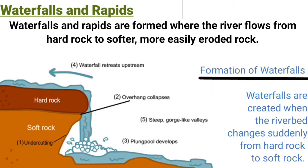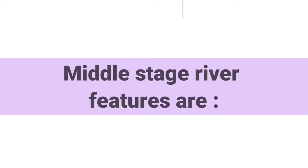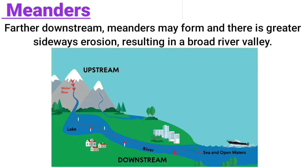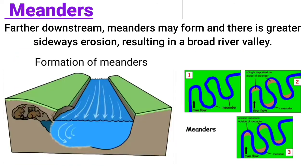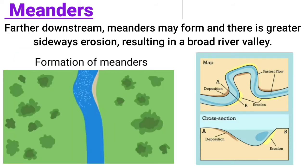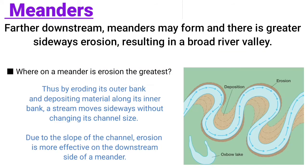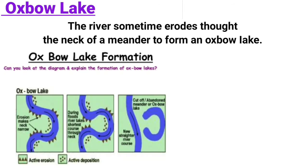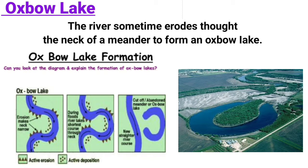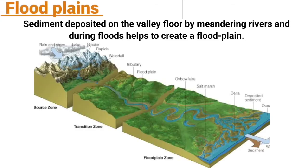Further downstream, meanders may form and there is greater sideways erosion, resulting in a broad river valley. The river sometimes erodes through the neck of a meander to form an oxbow lake.